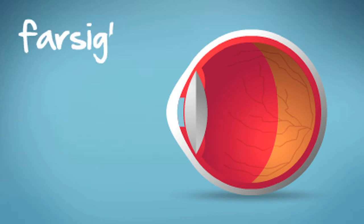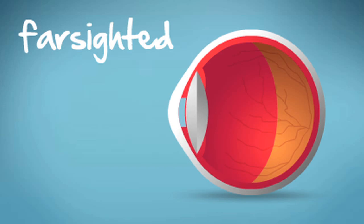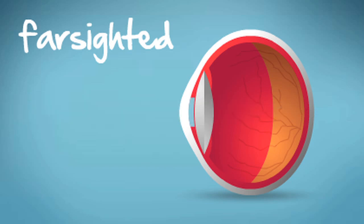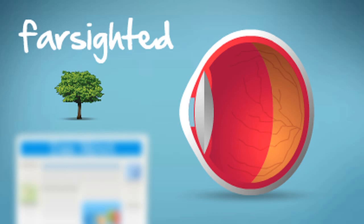Well, when you're far-sighted, your eyeball is too short. This means that light rays reach a point of focus beyond the retina. In this case, you see blurry images up close.